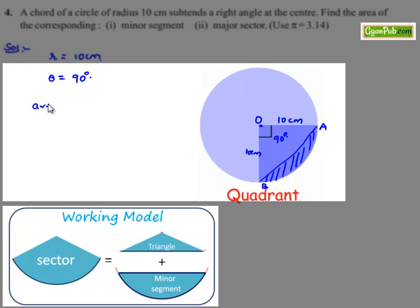The area of minor segment required is equal to area of sector OAB minus area of triangle AOB.